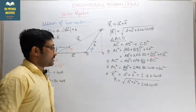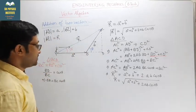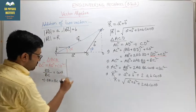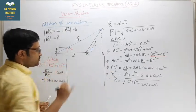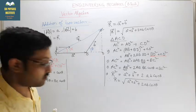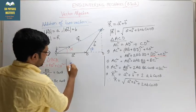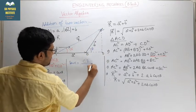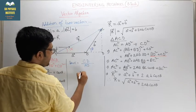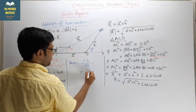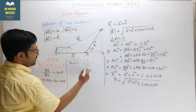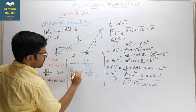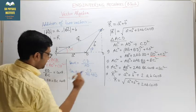So this is the resultant of the vectors — this is the triangle law of vector addition. Now how do you find the value of alpha? If you want to find alpha, then tan α = perpendicular CD divided by base AD, where AD = AB + BD.